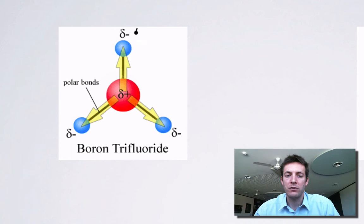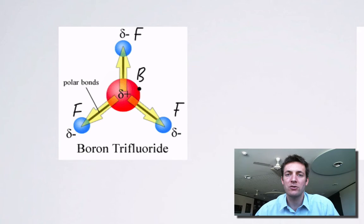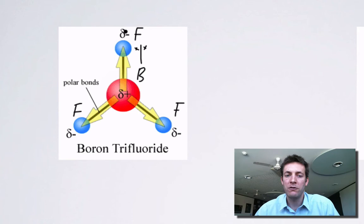Here are the fluorine atoms on the outside and boron in the middle. We should know by now that fluorine is an extremely electronegative element — it pulls the electrons in a bond towards itself a great deal. That means if we look at any one of the boron-fluorine bonds, the electron pair won't be in the middle but will be a long way over towards the fluorine and away from the boron. This makes the fluorine more negative and the boron more positive, and this bond is now polar — it has a slightly negative end and a slightly positive end.